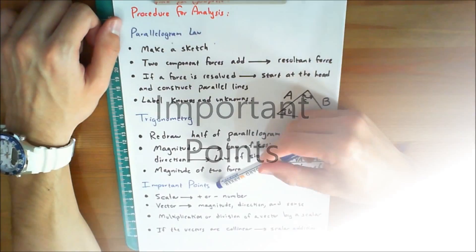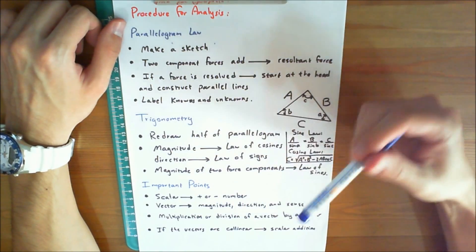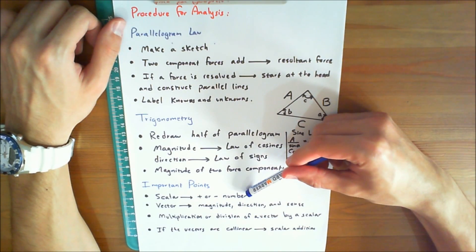Now let's discuss important points of this chapter. First, a scalar is a positive or negative number.